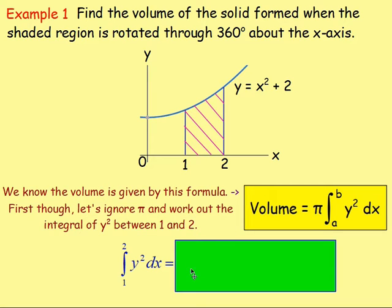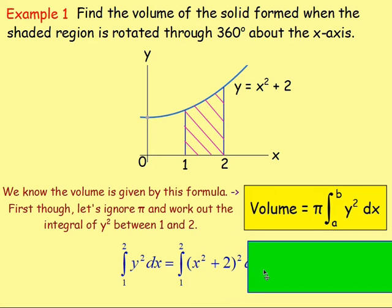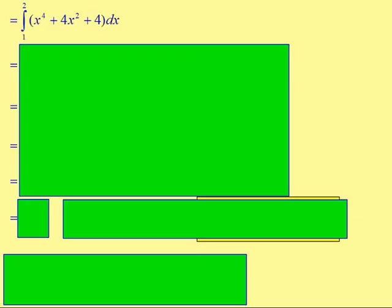If you integrate y squared, well, y is equal to x squared plus 2. So if we square that, that will be y squared. We're integrating that with respect to x between 1 and 2. We're just ignoring the pi just now. Because we just have something squared, as the bracket is squared, it's best to just write it out as x squared plus 2 times x squared plus 2 and then multiply out the brackets. If you do that, you get x to the power of 4 plus 4x squared plus 4.